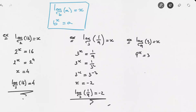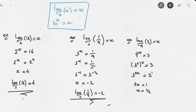We know that 9 equals to 3 squared, so the left-hand side can be written as 3 squared to the power of x equals to 3. Using our laws of exponents, the left-hand side turns into 3 to the power of 2x equals to 3. Remember, when we write 3, that's the same thing as writing 3 to the power of 1. So both sides are written as powers of 3, and we can equate the exponents: 2x equals to 1, which gives us x equals to 1 half. So log base 9 of 3 is equal to 1 half. That's how we can evaluate logarithmic expressions by rewriting them in exponential form.